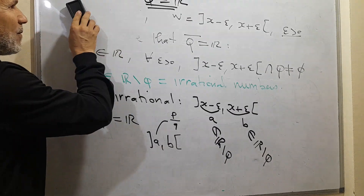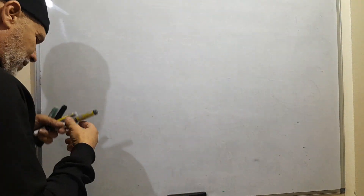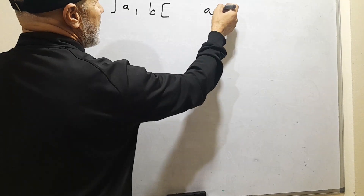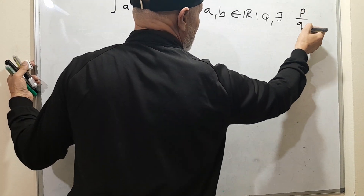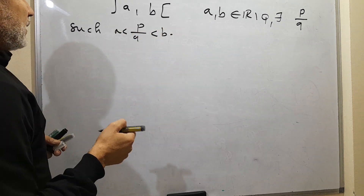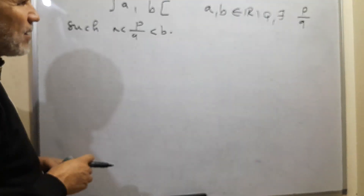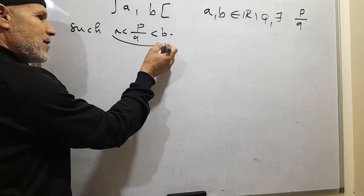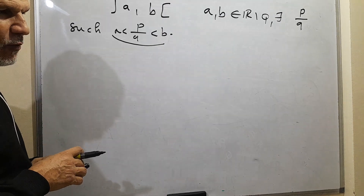The second step concerns showing that between two irrational numbers we can find a rational number. You will find this in all books when they say that Q is dense in R. But I try to explain why we have to prove this, starting from the definition in the general case of the density of a subset of a topological space.